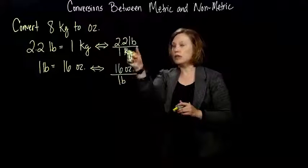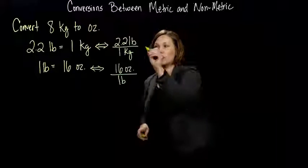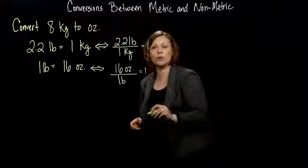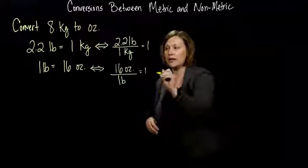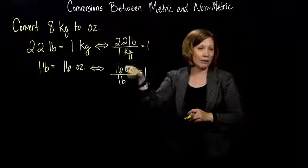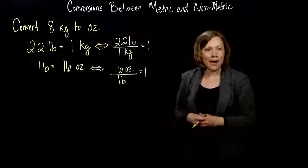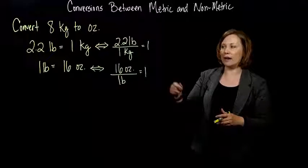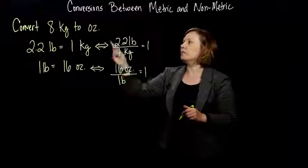So I've got my two equivalence factors. Remember, these things are both equal to 1, so it's completely legal to multiply by them. I'm not going to change the amount that I have there, as long as what I'm multiplying by is equivalent to 1. That's a math trick that's used over and over again, multiplying by 1 or adding 0.